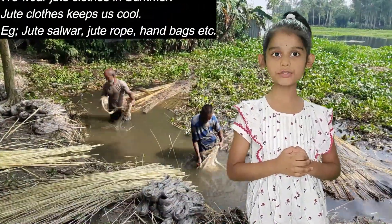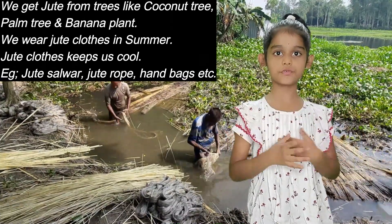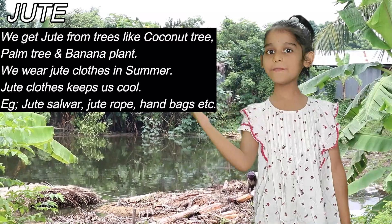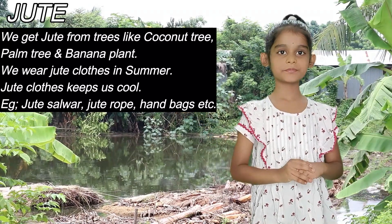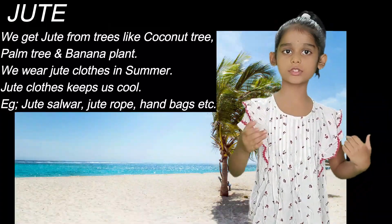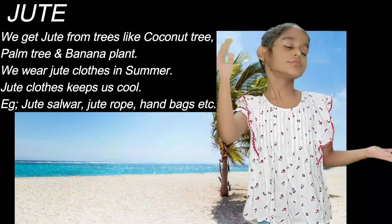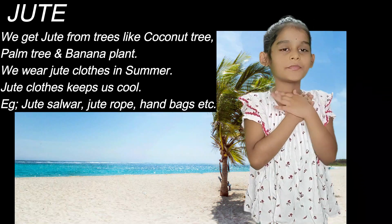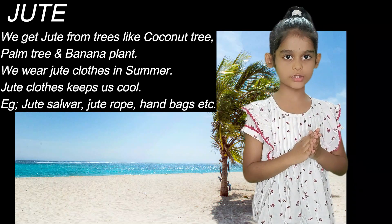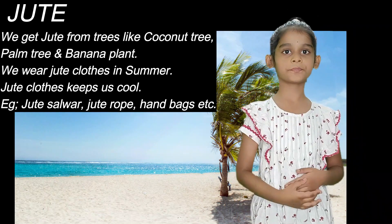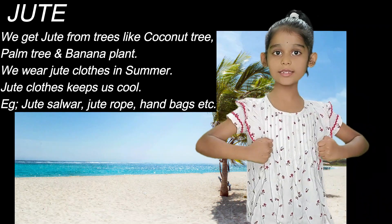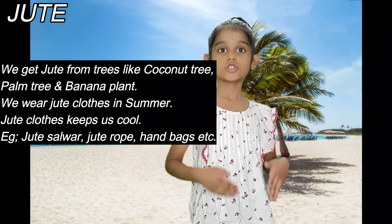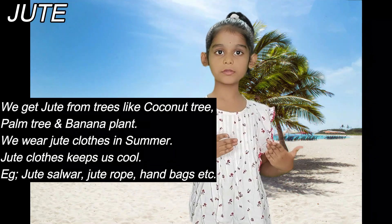Jute. We get jute from banana plant, coconut tree and palm tree. We wear jute clothes in summer. It keeps us cool. The examples for jute clothes are jute frock, jute bag, jute rope etc.